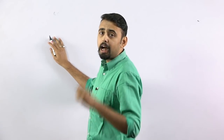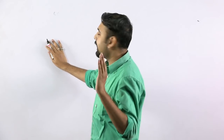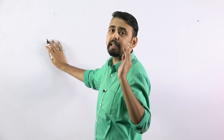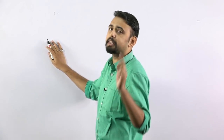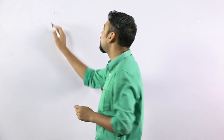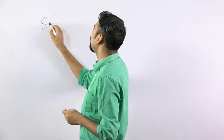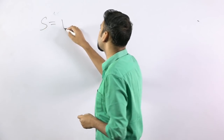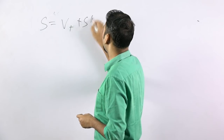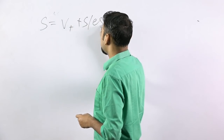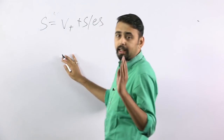Let's look at the rule of the present indefinite tense. There is a rule for singular subjects: for singular subjects we use the first form of the verb plus 's' or 'es.' That's the rule.